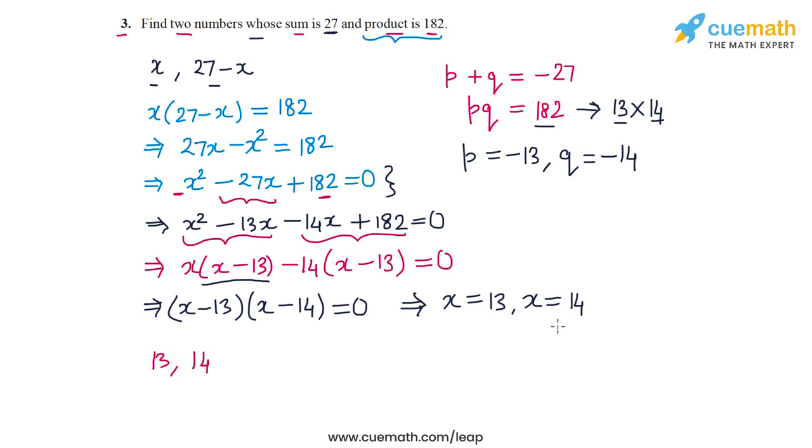And if we take x equal to 14, then the first number is 14, and the second number is 27 minus x, or 13. So in both cases of the roots, we get the same pair of numbers. We get 13 and 14. So the answer is that the two numbers whose sum is 27 and product is 182 are 13 and 14.